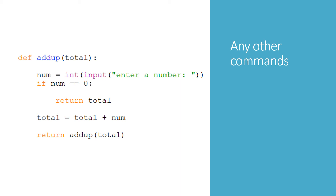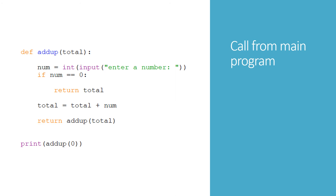Now we need to call it from the main program. We've got to do something with the final value returned by the function — in my example here, I'm simply printing it. So I'm printing the result of the function add_up and I'm calling it with a parameter, because the parameter is used inside the function. My initial parameter will be zero because I'm starting from nothing and adding on the numbers entered by the user.